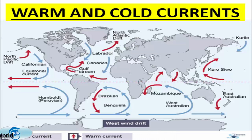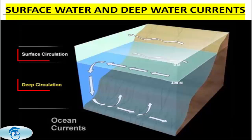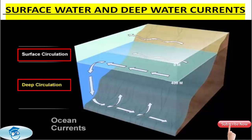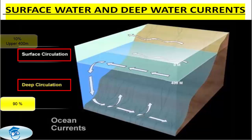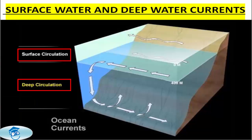Based upon their depth, ocean currents can also be divided into two categories: the surface currents and the deep water currents. The surface currents constitute about 10% of all the water in the ocean and lie in the upper 400 meters of the ocean, whereas the deep water currents make up the other 90% of ocean water. These waters move around the ocean basins due to variations in density and gravity.